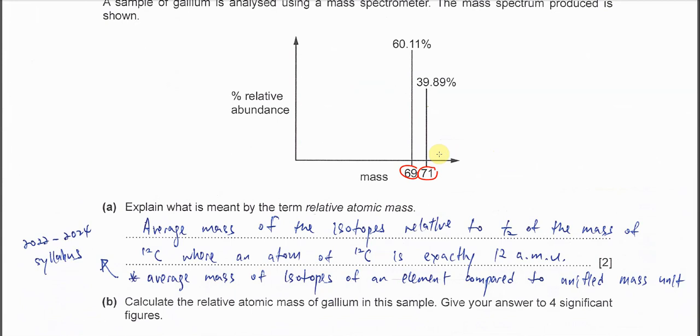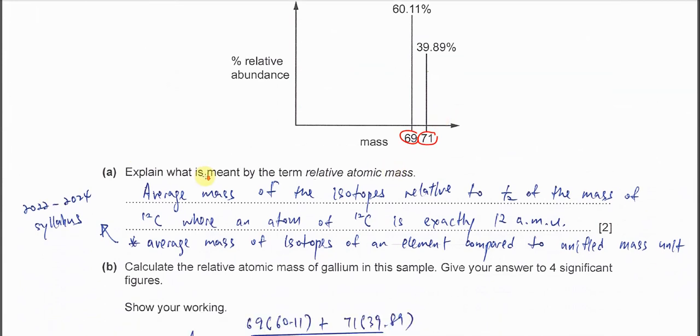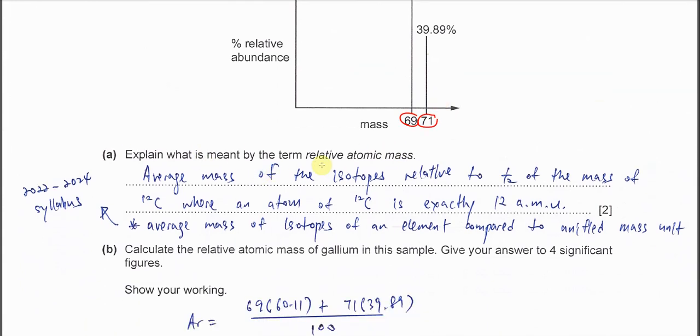Part A. Explain what is meant by the term relative atomic mass. The definition for relative atomic mass for the old syllabus is average mass of the isotopes relative to one over twelve of the mass of carbon-12 where one atom of carbon-12 is exactly 12 AMU.